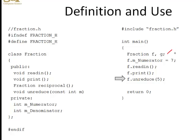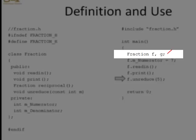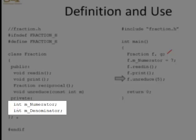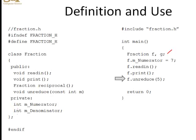When we declare fractions f and g, each of those two objects contains two ints: a numerator and a denominator. f has two integers — a numerator and a denominator. It doesn't contain copies of these functions, but each one of these fractions has access to them. The compiler, when it comes across this definition, will put these four functions onto a function table associated with the type fraction, and any fraction object — in this case f and g — can access those member functions.